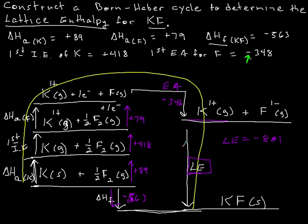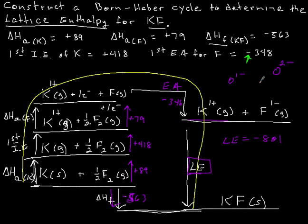One thing to mention before we move on: if there happens to be a metal that forms a 2- ion — say it was oxygen needing to be 2- — the first electron affinity step would bring it down to 1-, but we'd need to add another electron to make it 2-. Remember, the second electron affinity actually goes back up, and then it would go back down. We're going to do some practice, so you'll see that in the practice problems. That's a Born-Haber cycle.